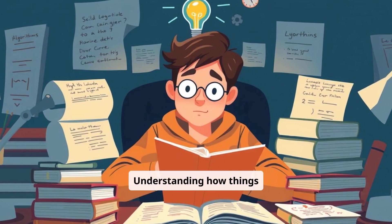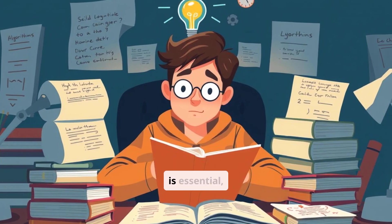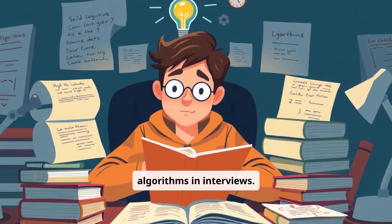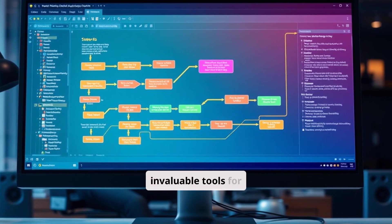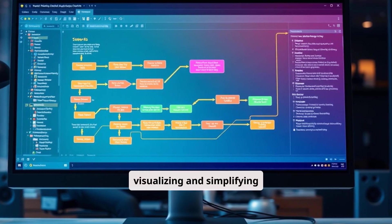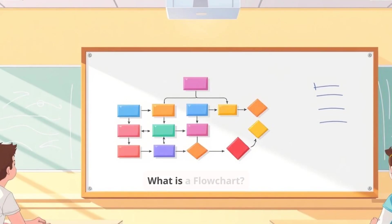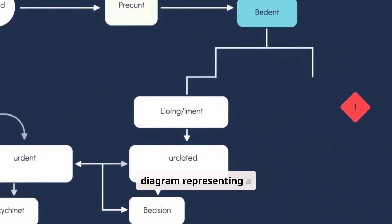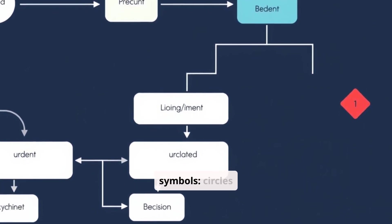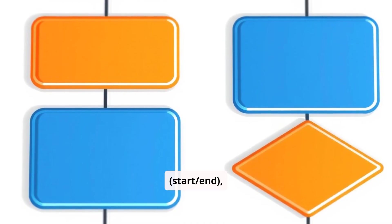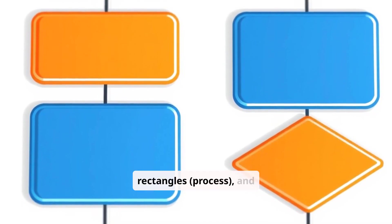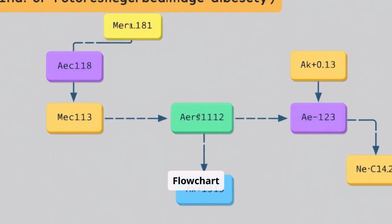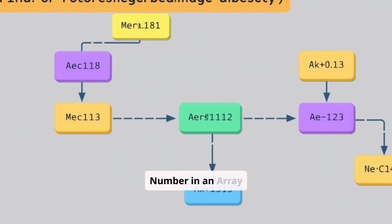Understanding how things work step-by-step is essential, especially when explaining algorithms in interviews. Flowcharts are invaluable tools for visualizing and simplifying algorithms. A flowchart is a diagram representing a process using different symbols: circles for start/end, rectangles for processes, and diamonds for decisions.